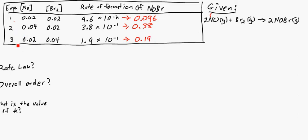And really, we're not going to compare 2 and 3, we're going to compare 1 and 3. So comparing experiment 1 and experiment 3, you see that in experiment 1, where you have 0.02 and 0.02 of each NO and Br2, if you double Br2, this gives you a doubling of your rate. So this tells us that both NO and Br2 are pretty important to create this NOBr.